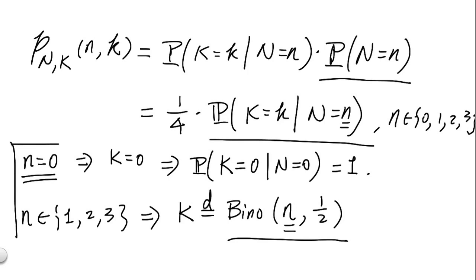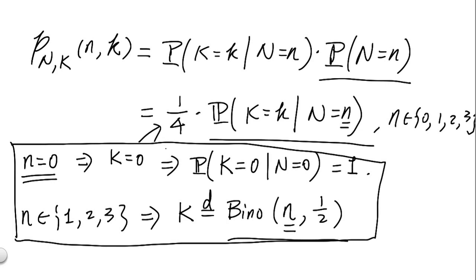And now we're done since we know what the binomial distribution looks like given parameter n and 1/2. And we'll simply substitute, based on the case of n, the conditional distribution of k back into the product we had earlier, which in turn will give us the joint PMF.